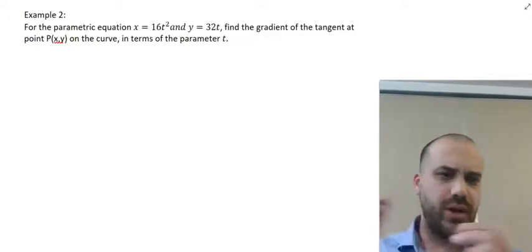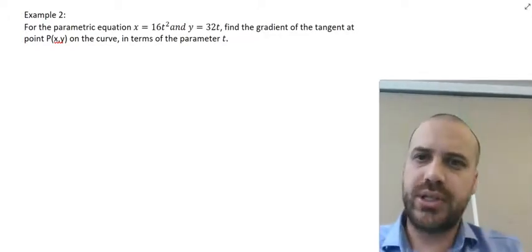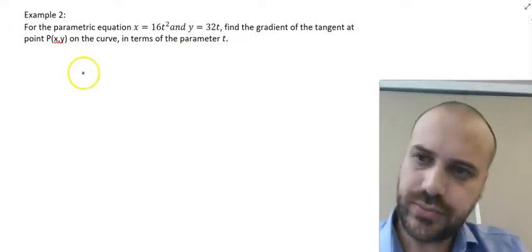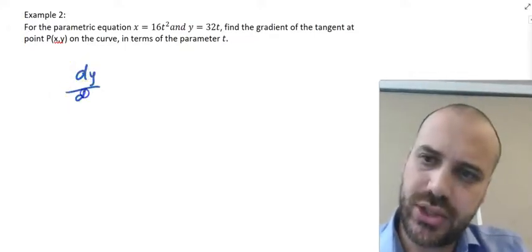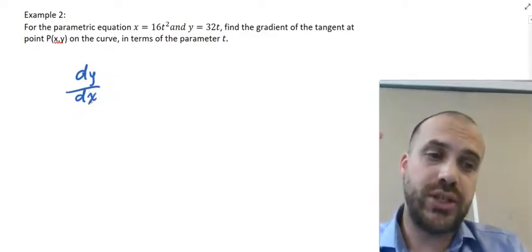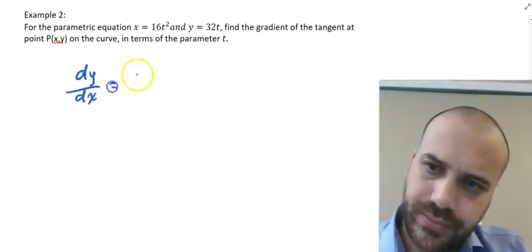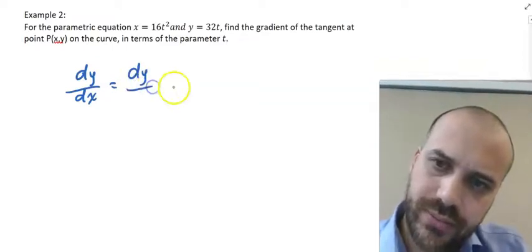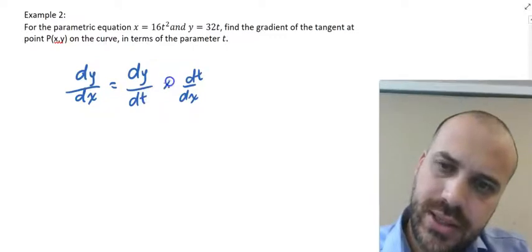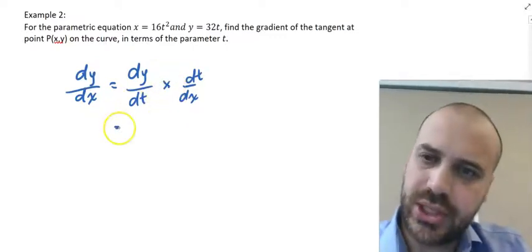So we're finding the gradient of a tangent, but it's going to be in terms of parameter t. So this is a good example. We're finding the gradient of the tangent to the curve. In other words, we're finding the rate of change of y with respect to x, dy/dx equals dy/dt times dt/dx.